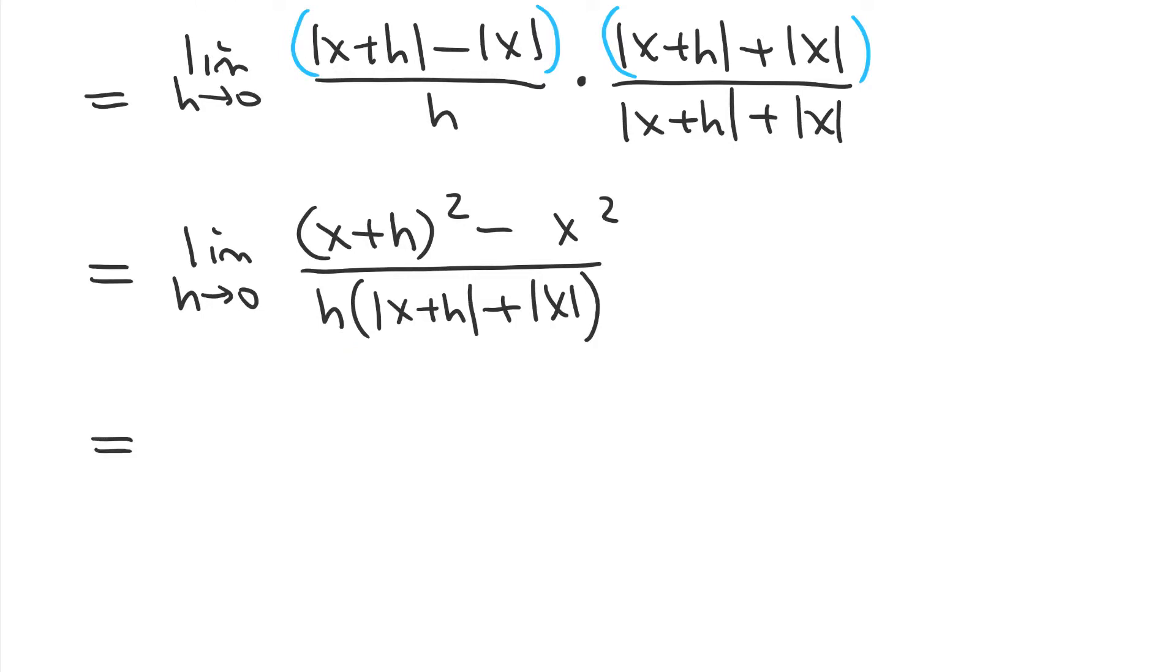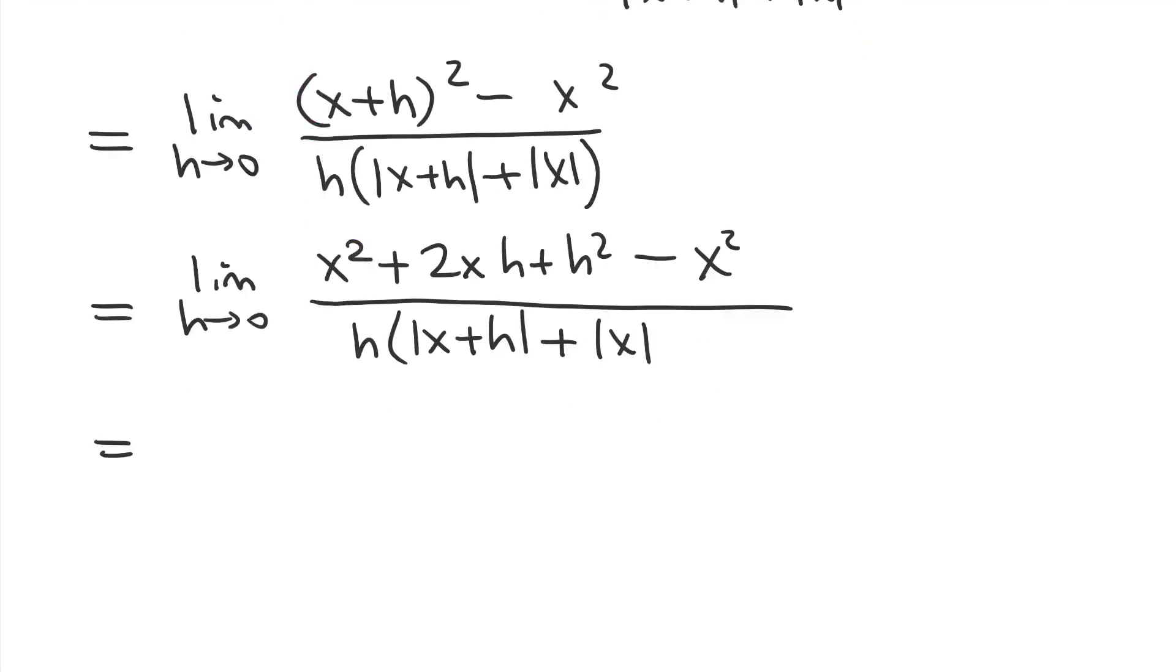So, here we go. So, we have to expand the expression in the numerator. So, we get x squared plus 2xh plus h squared minus x squared. All of this is over h absolute value of x plus h. Just copying it down here. And then notice that the x squared and negative x squared cancel each other. And so, in our numerator, we end up with 2xh plus h squared. In our denominator, we have all of this mess.